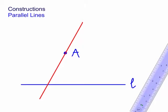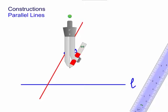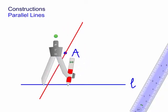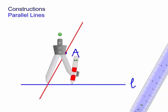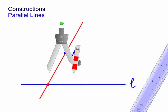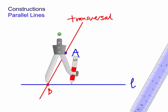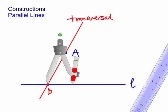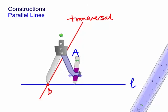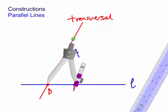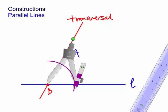Now we need to copy this angle. How do we copy an angle? We need a compass. The easiest way is to draw an arc at any radius — obviously less than the distance to A. Let's mark that point B. Put the compass point in at B and draw an arc of any radius. We now have an arc.